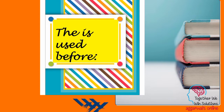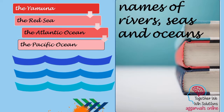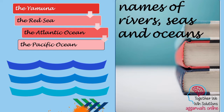Where else can we use article 'the'? It is used before objects with proper nouns. Article 'the' is used before names of rivers, seas, and oceans. For example, Yamuna is the name of a river, so we would say 'the Yamuna'. Ganga is also the name of a river, so we say 'the Ganga'. Similarly, 'the Red Sea', 'the Pacific Ocean', and 'the Atlantic Ocean' are a few other examples.